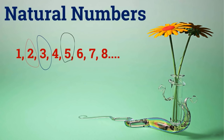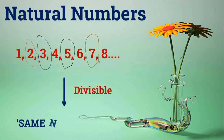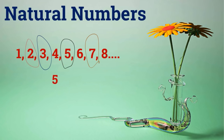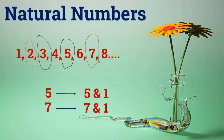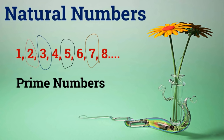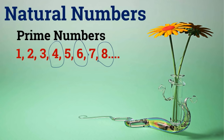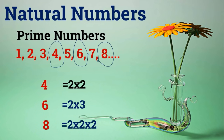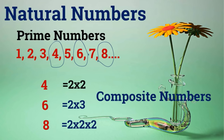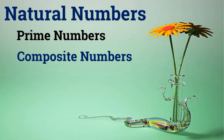If you observe 2, 3, 5, 7 — these numbers are divisible only by the same number and 1. For example, 5 is divisible by 5 and 1; 7 is divisible by 7 and 1. So 2, 3, 5, 7 are prime numbers — they have no other factor. Numbers like 4, 6, 8 are made by multiplication of prime numbers: 4 equals 2 times 2, 6 equals 2 times 3, 8 equals 2 times 2 times 2. These are composite numbers. Natural numbers are classified into prime and composite numbers.